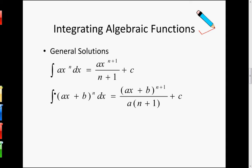And then this is the chain rule one. In the chain rule, what we do is we bring the power down first, and then we decrease the power by one. So over here, what we have to do is increase the power by one, and then bring the power down. And don't forget — because if we differentiated, we would have multiplied by a, so if we integrate, we would have divided by a as well. And you must always have the constant of integration for an indefinite integral.